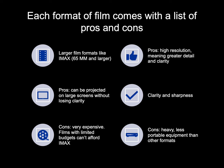Larger film formats like IMAX — 65mm and larger. Pros: high resolution, meaning great detail and clarity. They can be projected on large screens without losing clarity and sharpness. Cons: very expensive — films with limited budgets can't afford IMAX. Also heavy, with less portable equipment than other formats.